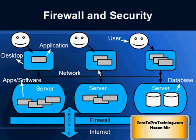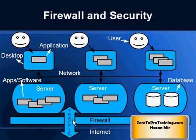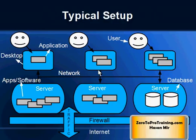What we just talked about is happening within the boundary of the company, but a company does interact with the rest of the world through the internet. In a typical environment, we have a firewall between the internet and the company's network. The firewall is represented by a combination of hardware and software managed by the network team, and traffic flows between the company and the internet through the firewall in a secured manner.